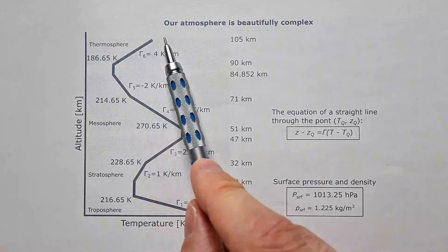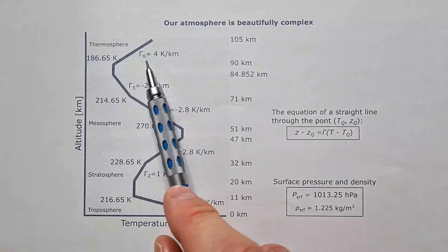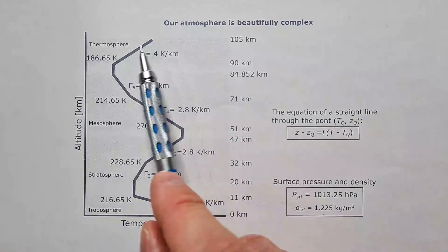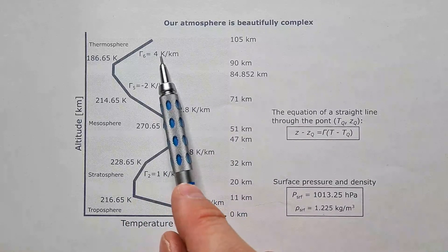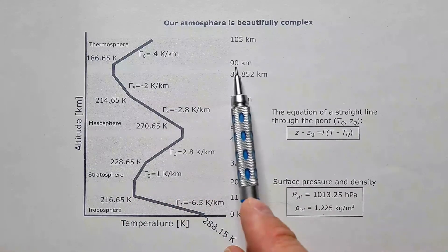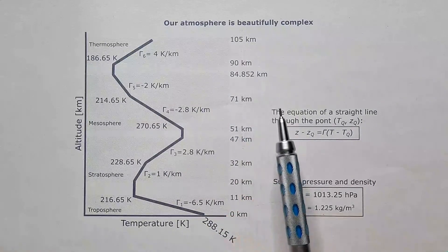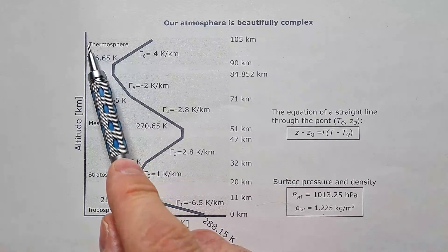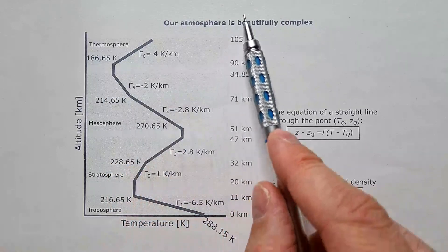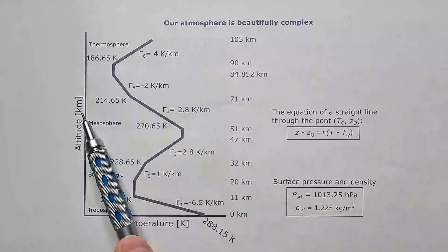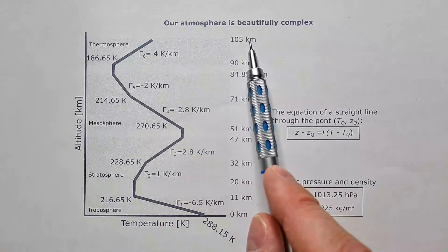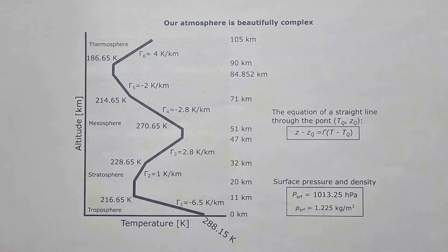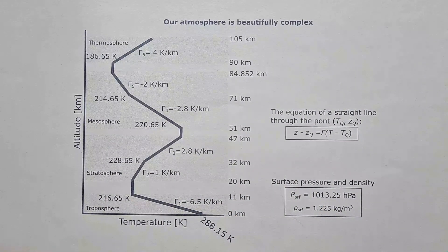In the thermosphere, temperature is increasing, and in the first part of the thermosphere it is increasing at 4 kelvins per kilometer between 90 and 105 kilometers. Kindly recall from my previous videos that the thermosphere is much deeper than this, but the standard atmosphere only goes to 105 kilometers above the surface.